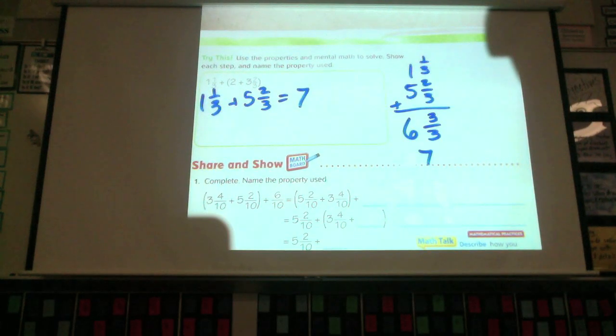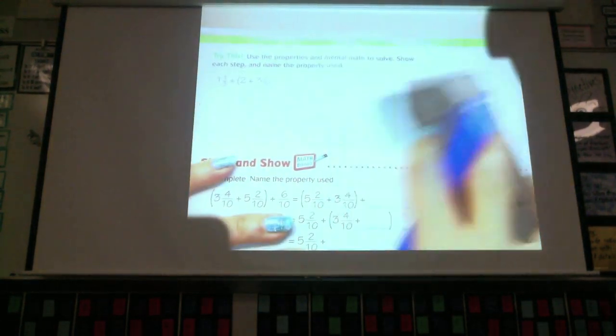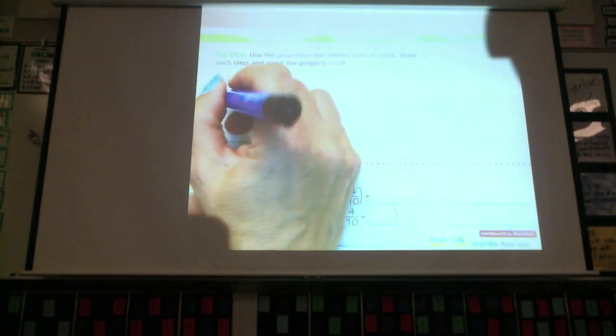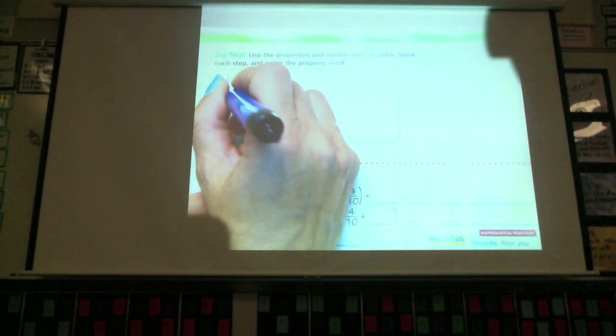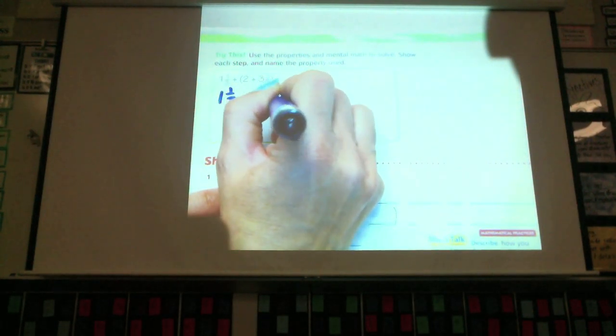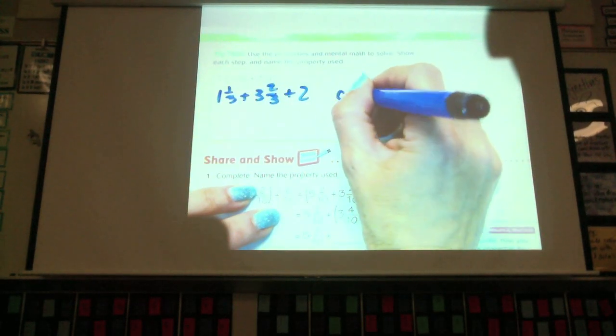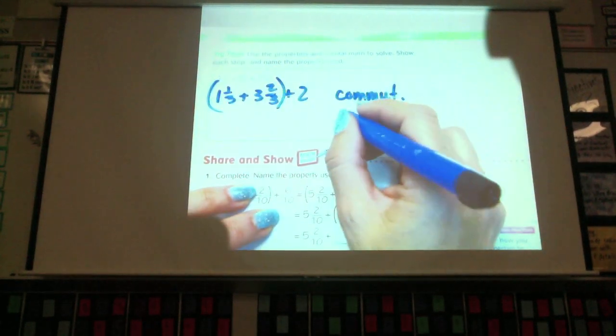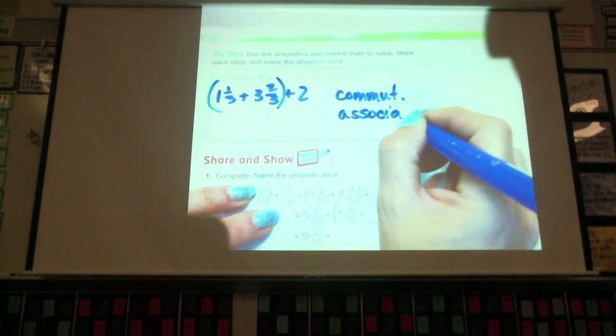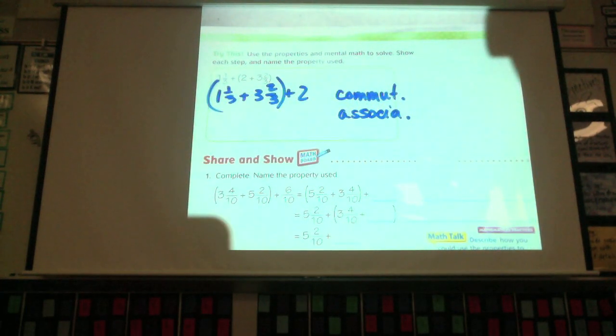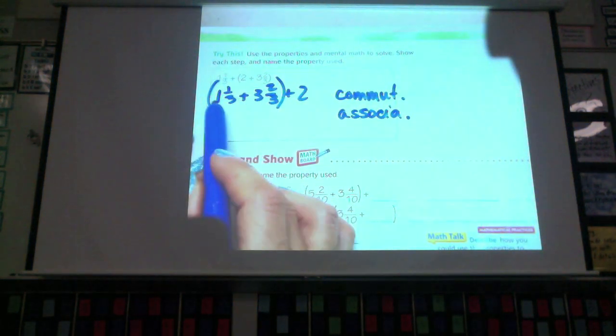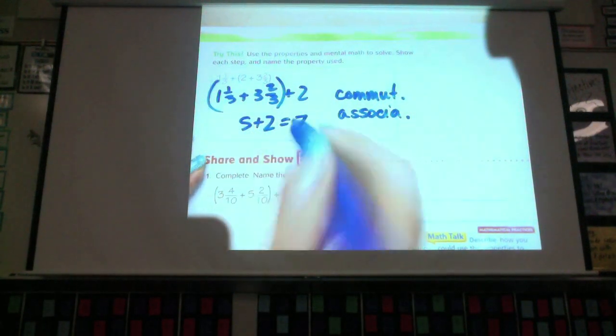Okay. I really didn't use any properties to change anything. However, I can choose to group the 1 and... well, you'd have to change the order first. You'd have to use the associative property to do 1 and 1 third plus 3 and 2 thirds plus 2. So, that would be commutative. And then, I can group these this way, which would be associative. I guess they kind of go together. So, I can add these first, which is 1 plus 3, which is 4, and I know the 1 third plus 2 thirds is a whole, so I'd have 3, 4, 5 plus 2 equals 7. I could do it that way, too.